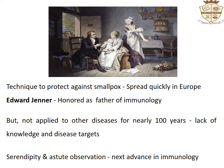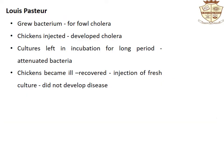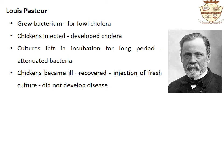Serendipity in combination with astute observation led to the next major advance in immunology. Louis Pasteur was successful in growing the bacterium responsible for fowl cholera in culture, and he showed that when chickens were injected with this bacterial culture, they developed cholera. After a summer vacation during which the cultures were left in incubation for a long period of time, he observed that the long incubation attenuated the bacteria — that is, the bacteria lost their ability to cause disease. Pasteur injected some chickens with this old culture and, to his surprise, even though the chickens became ill, they recovered.